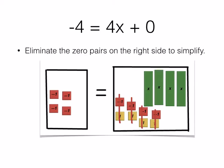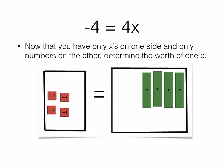Now let's cancel out our zero pairs on the right and simplify the equation to negative 4 equals 4x.